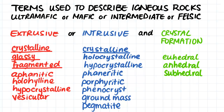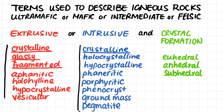After we've defined the rock as intrusive or extrusive, we can then use all of these terms to describe the rock even further. These terms are all used to describe specific features of igneous rocks. And then finally we have the terms of euhedral, anhedral and subhedral, which are used to describe the crystal formation that we can see within the igneous rocks.